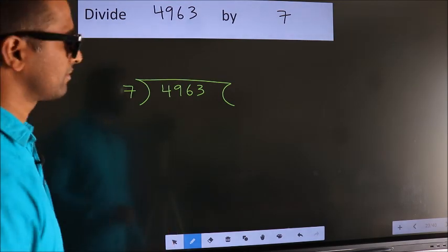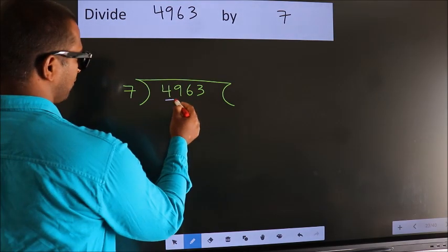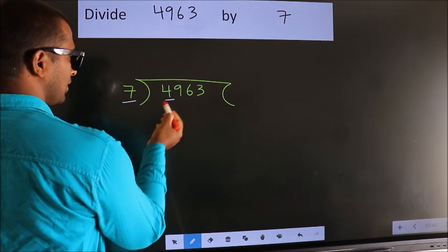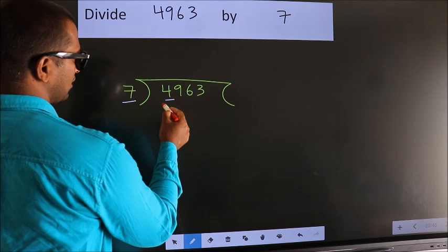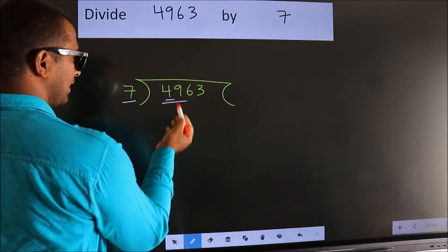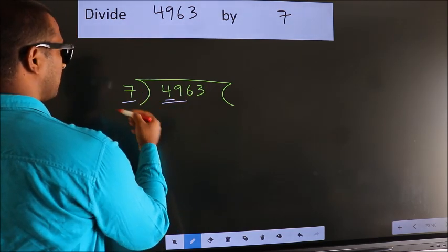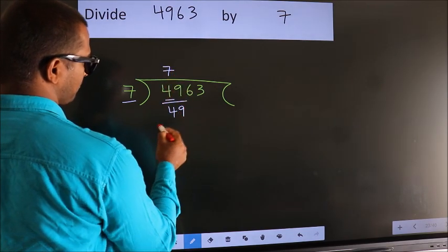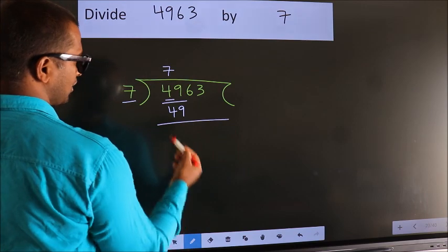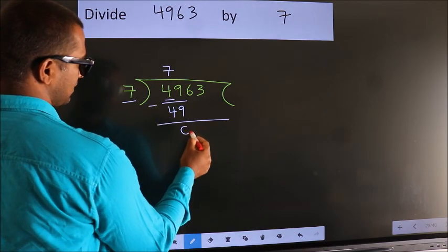Next. Here we have 4. Here 7. 4 smaller than 7. So we should take 2 numbers, 49. When do we get 49? In 7 table. 7 7s 49. Now we should subtract. We get 0.